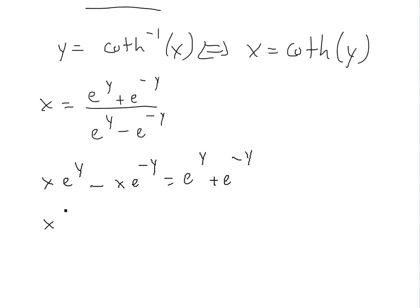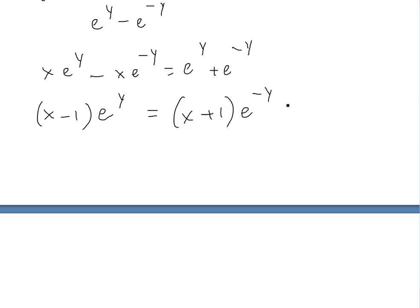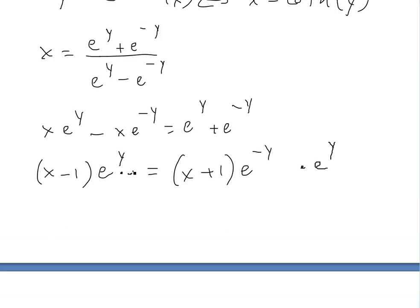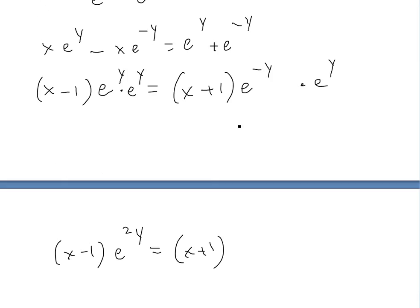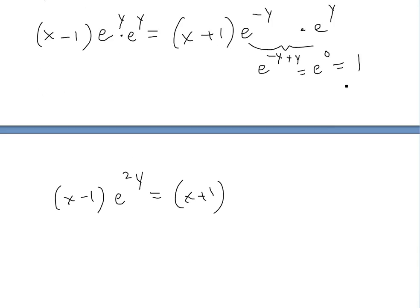Now move all the e^y terms to the left side and all the e^(-y) terms to the right side, factoring as we go. We get (x - 1)e^y = (x + 1)e^(-y). Now multiply both sides by e^y, giving (x - 1)e^(2y) = (x + 1) · e^(-y) · e^y. Since e^(-y) · e^y = e^0 = 1, we get (x - 1)e^(2y) = (x + 1).